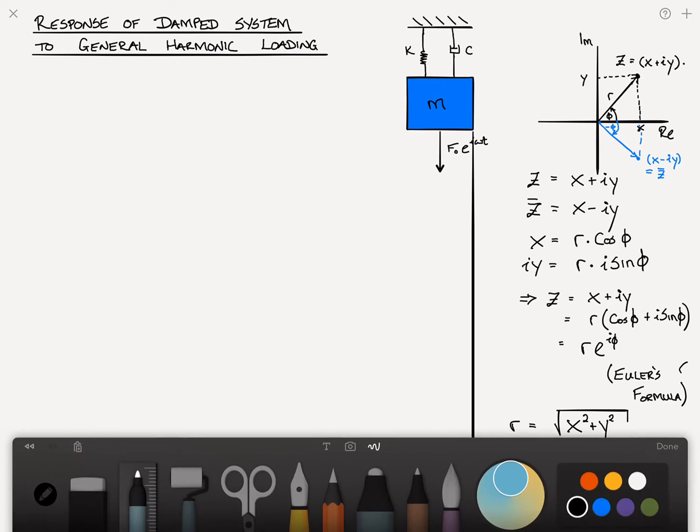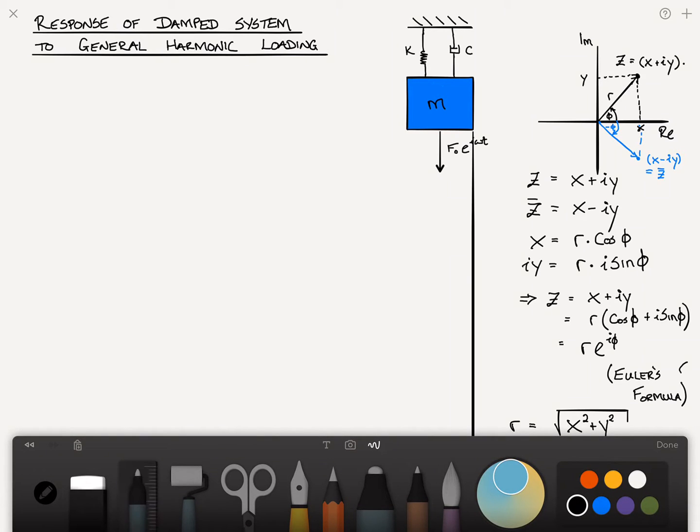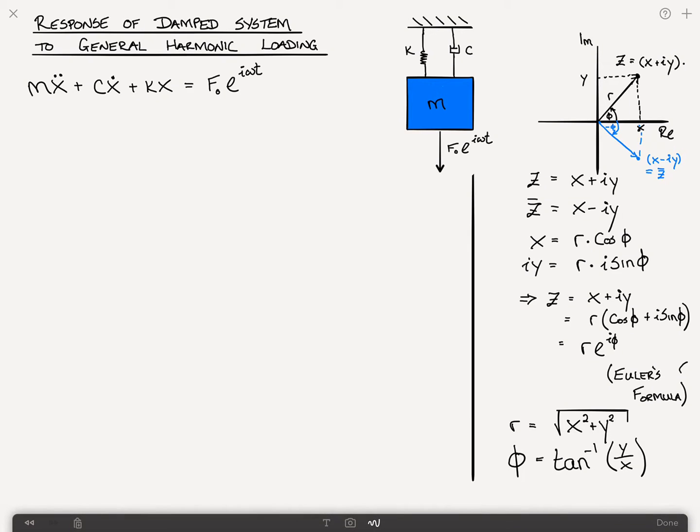I've got this mass spring system. This is F naught e to the i omega t. The equations of motion can be written out. That's mx double dot plus cx dot plus kx is equal to F sub zero e to the i omega t, which is the external force. And I'll remind you that because of Euler's formula, this external force is a general case of harmonic loading because it incorporates both sine and cosine, the sine and cosine function.